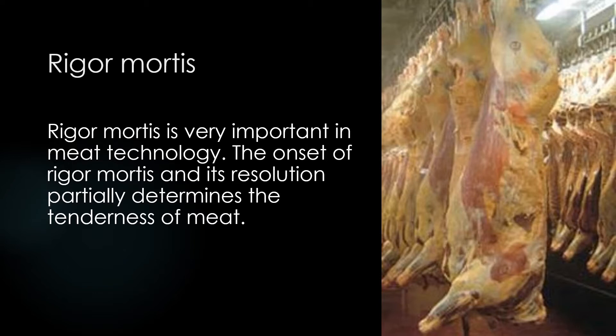Rigor mortis gradually disappears — 3 to 4 days are required for beef, and less time is required for lamb, veal and pork. All fresh beef is aged for at least a few days and up to 7 weeks, allowing enzymes naturally present in the meat to break down the muscle tissues, resulting in improved texture. Most beef is aged either by wet aging or dry aging.